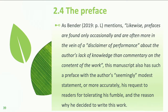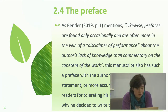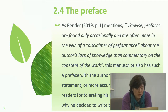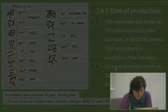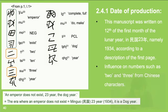As Professor Bender mentions, prefaces are found only occasionally and are often more in the vein of a disclaimer about the author's lack of knowledge than commentary on the content. This manuscript also has such a preface with the author's seemingly modest statement — more accurately, his request to readers for tolerating his fumble and the reason why he decided to write this work. Before examining the main part, I will demonstrate when this manuscript was written. This is a very rare case for E manuscripts, because the production date is normally not written on them. However, in this manuscript there is a description of the date of its production, mentioned in the very first sentence.